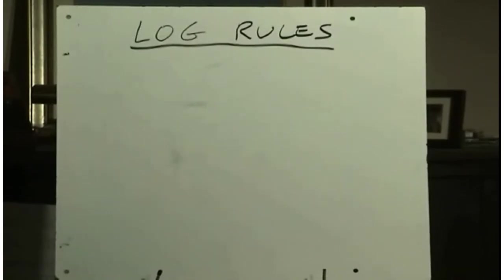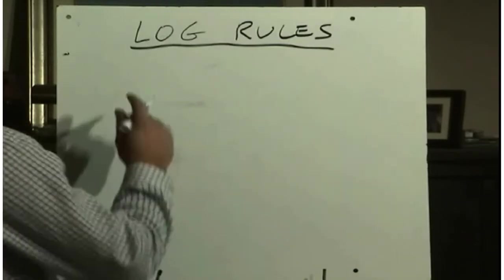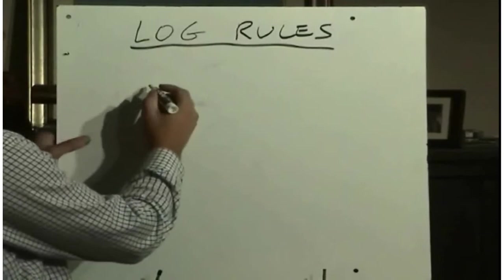So you've seen two rules. You've seen the rule where we have an exponent, we're allowed to bring it down in front, and we have the change of base rule. So here's where the logarithms, just those two rules there are so powerful.